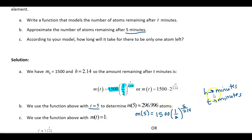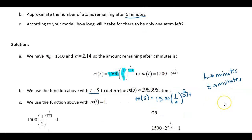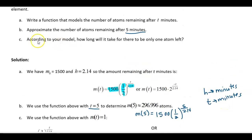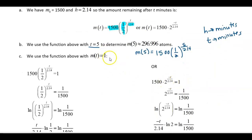In this case, we did not have to do any unit conversions — just make sure you're always thinking about that. Part C: how long will it take for there to be only one atom left? That's an output value, so take the function, set it equal to 1, and solve.